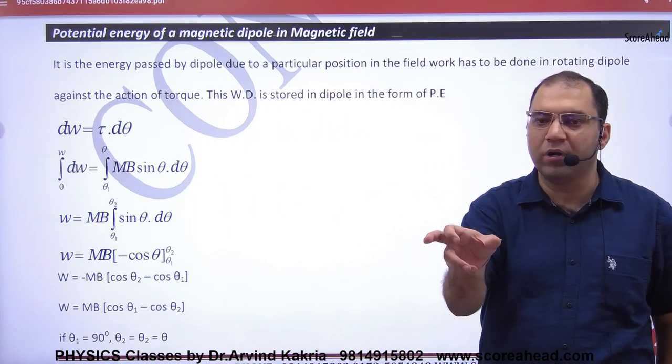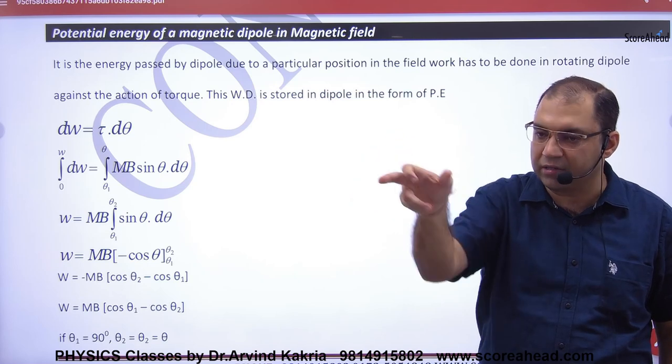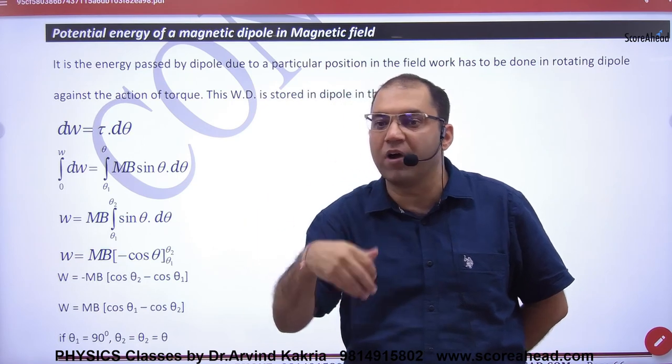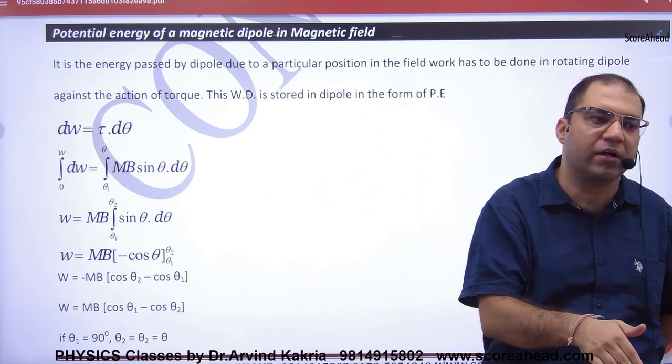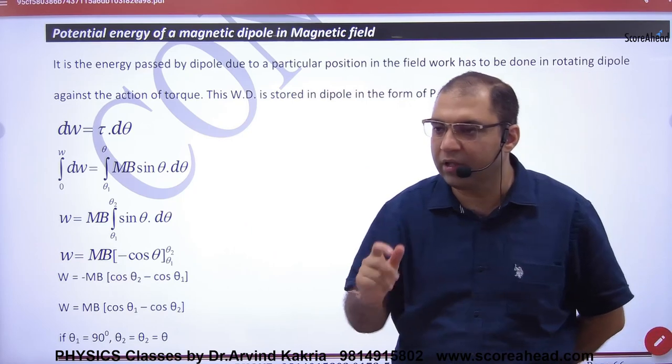If you have a dipole in equilibrium position, you have to do work. Similarly, if you have a magnet, you have to rotate it in the magnetic field, then you have to do work. It will be stored in the magnetic dipole in the form of potential energy.